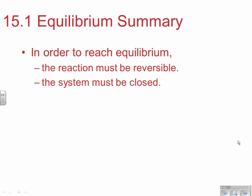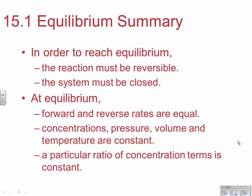In order to reach equilibrium: first, the reaction must be reversible; second, the system must be closed. If any reactants or products are able to escape, that affects the growth of one rate and the dropping of the other. Most solutions we look at are in beakers — even without a lid, it's a closed system from the viewpoint of the substances dissolved within the liquid. At equilibrium, the forward and reverse rates are equal — that's the 'equal' in equilibrium. Concentrations, pressures, volumes, and temperatures all become constant — not equal, but constant. A specific ratio of concentration terms is also constant, so we can derive a constant relationship between reactant and product concentrations.